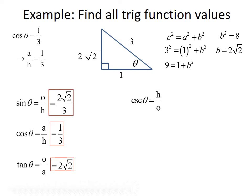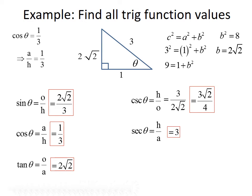Cosecant of theta is hypotenuse over opposite, so that's 3 divided by 2 root 2. Rationalizing by multiplying by root 2 gives 3 root 2 over 4. Secant of theta is hypotenuse over adjacent, which gives 3 over 1, or just 3. And cotangent of theta is adjacent over opposite, which gives 1 divided by 2 root 2. Rationalizing gives root 2 over 4.